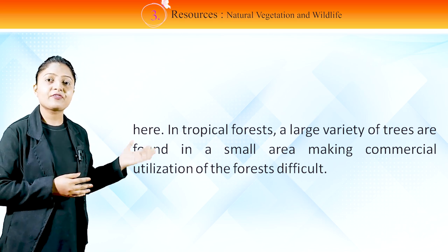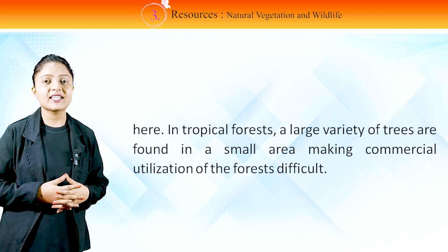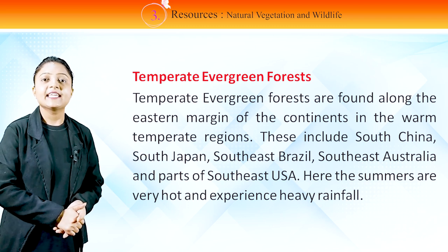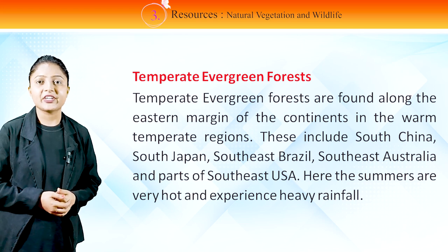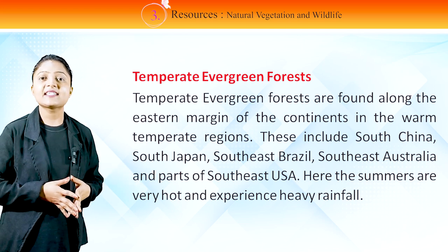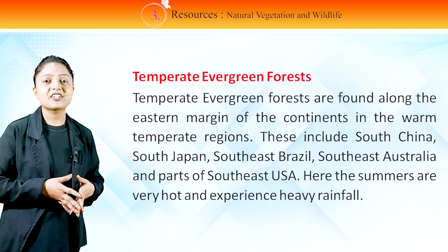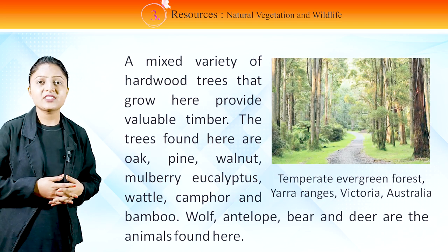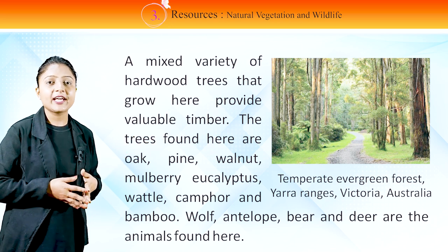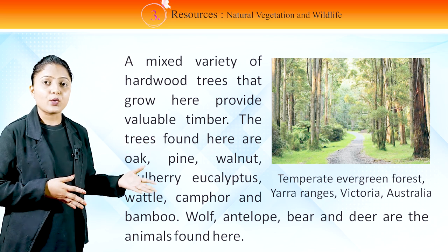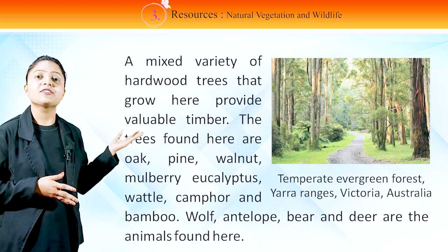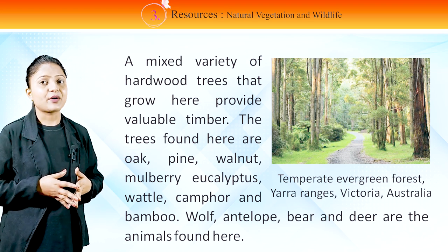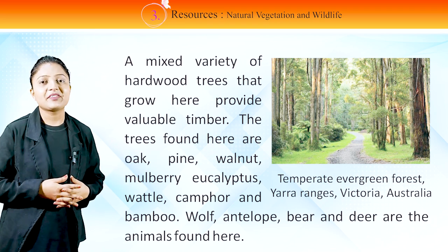Temperate evergreen forests are found along the eastern margin of the continents in the warm temperate regions, including South China, South Japan, Southeast Brazil, Southeast Australia and parts of Southeast USA. Summers are very hot and experience heavy rainfall. A mixed variety of hardwood trees that grow here provide valuable timber. The trees found here are oak, pine, walnut, mulberry, eucalyptus, wattle, camphor and bamboo. Wolf, antelope, bear and deer are the animals found here. In this image, you can see temperate evergreen forests — Yarra Ranges, Victoria, Australia.